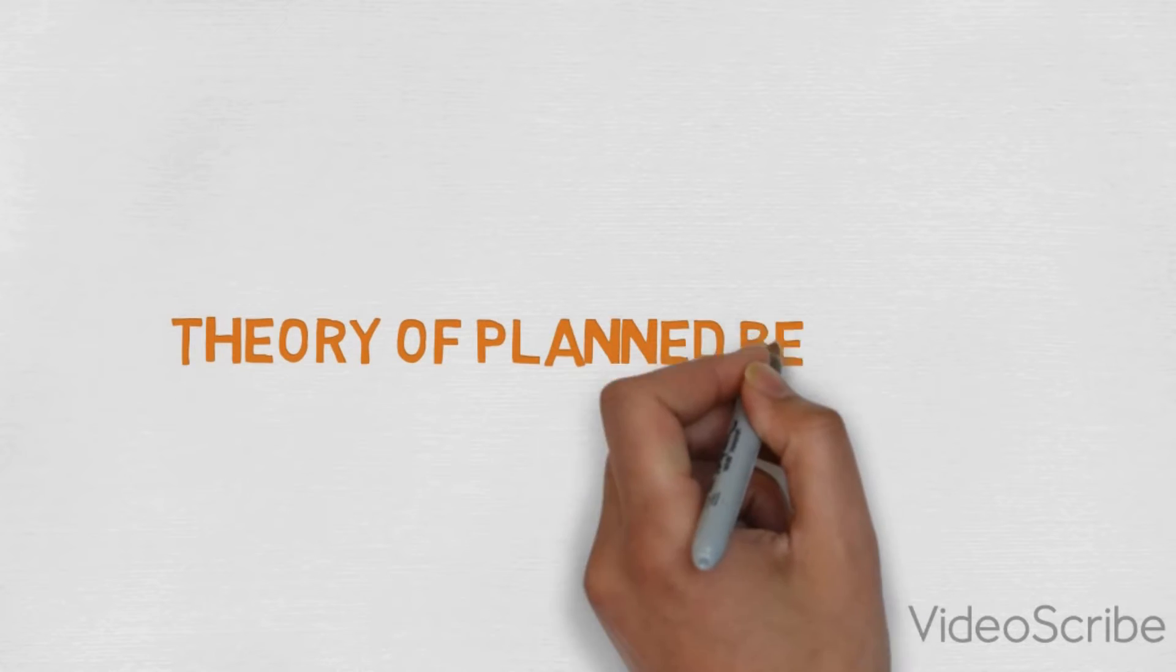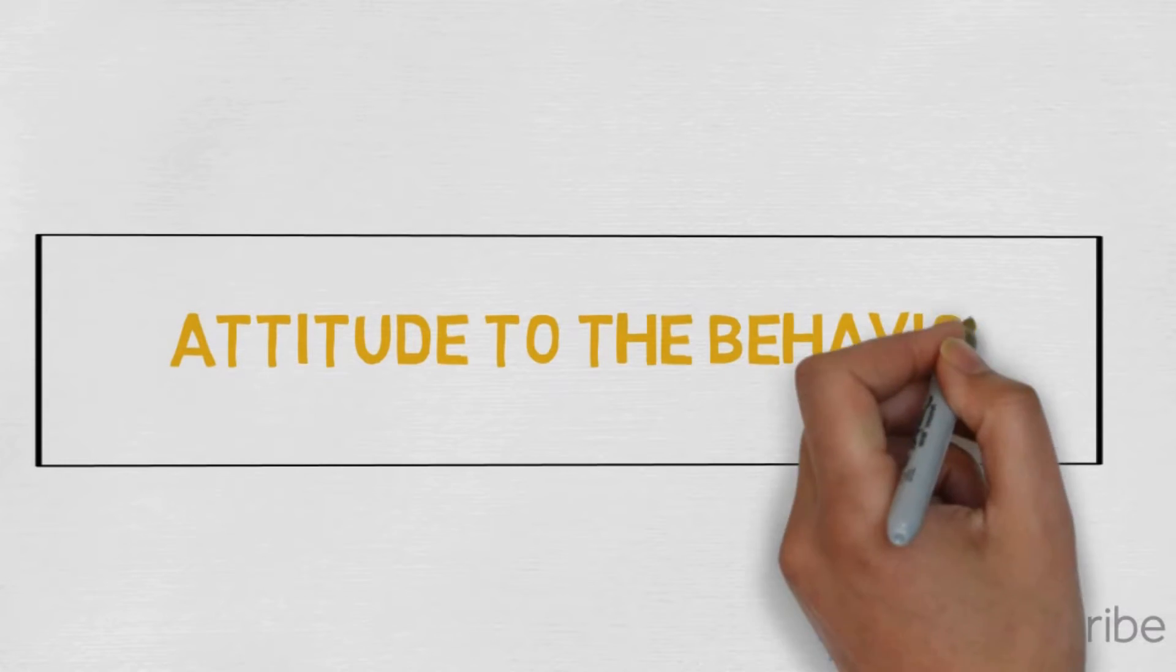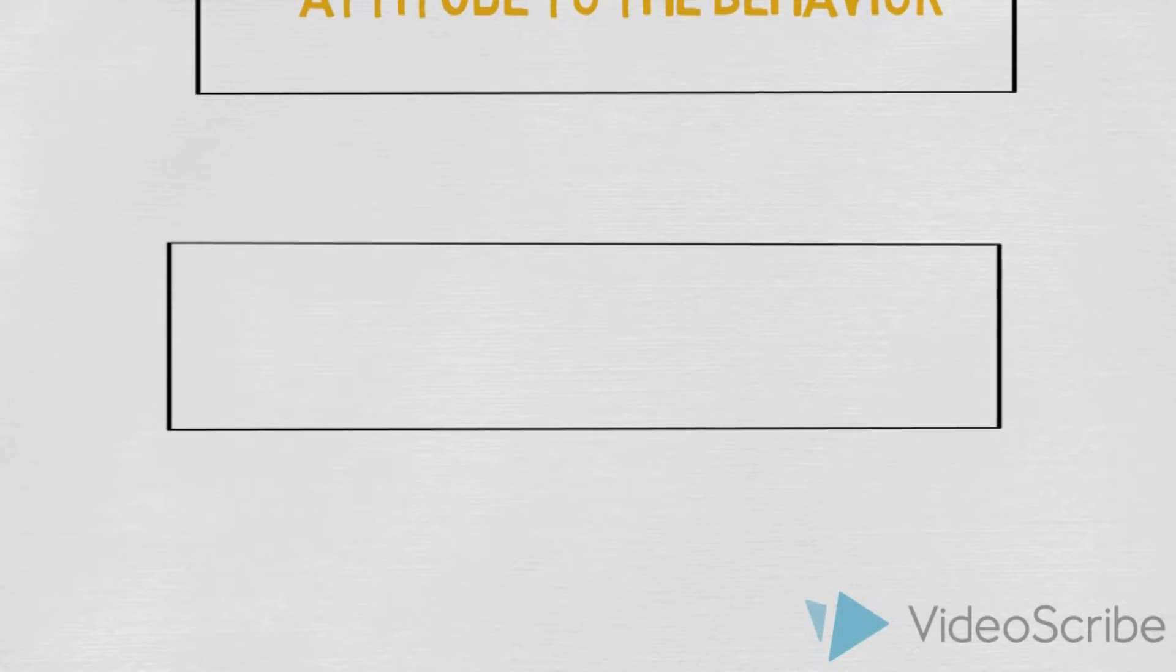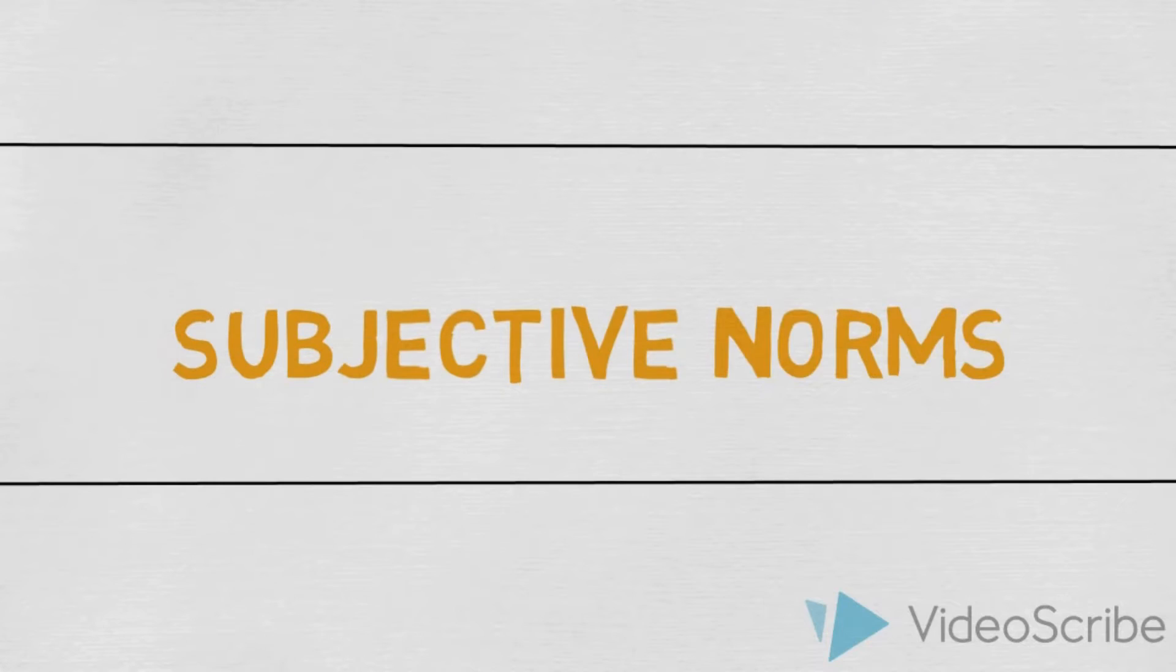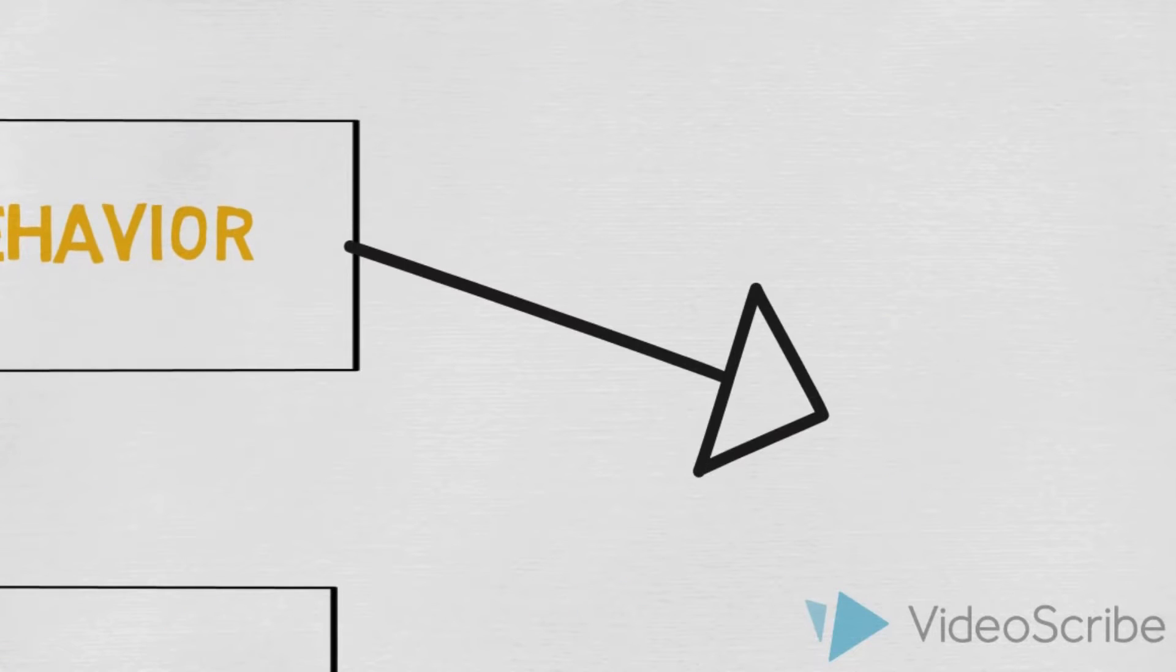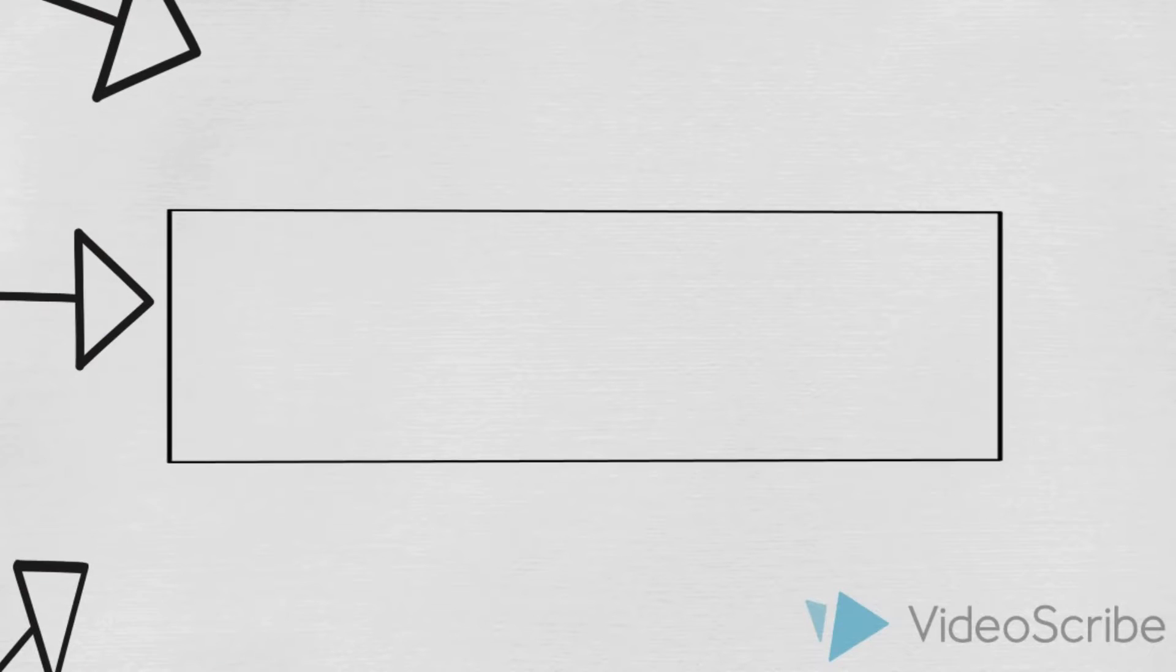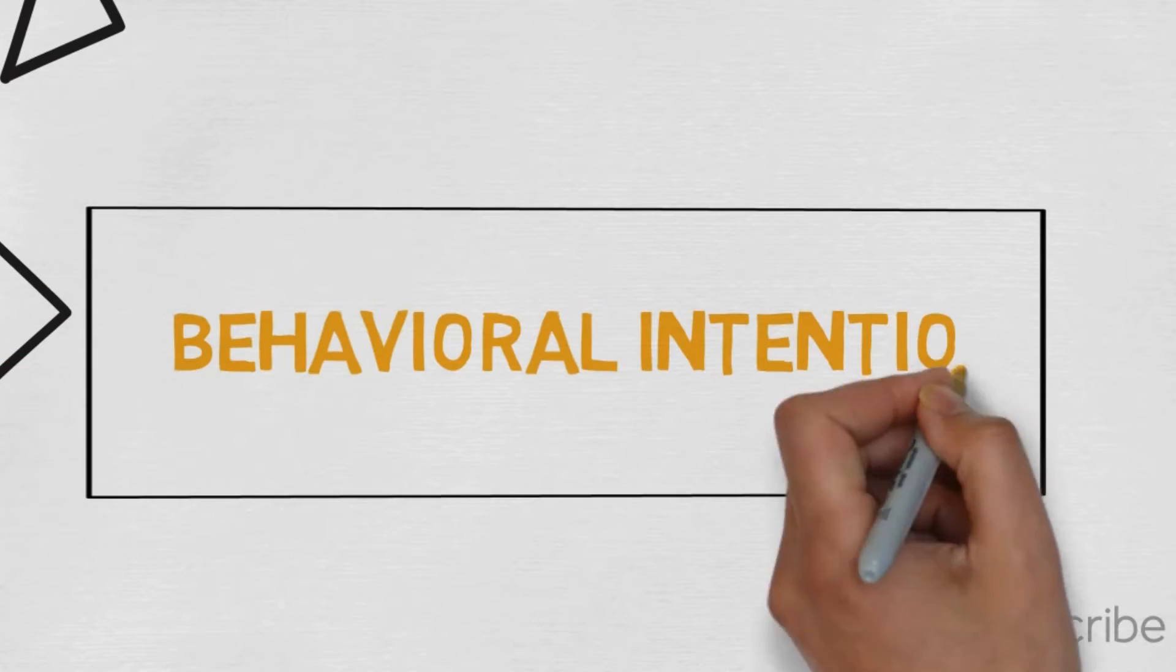The theory of planned behavior predicts the likelihood of people engaging in a behavior. It includes attitudes toward the behavior, subjective norms, and perceived behavioral control. All of these lead to a behavioral intention, which eventually turns into a behavior or not.